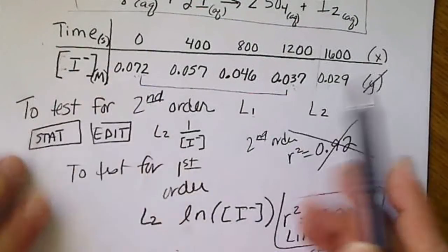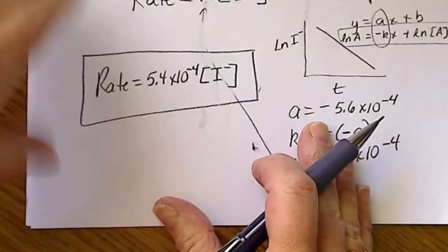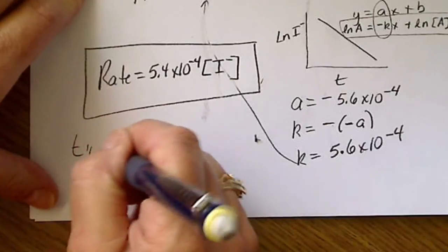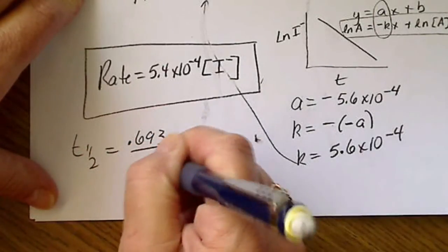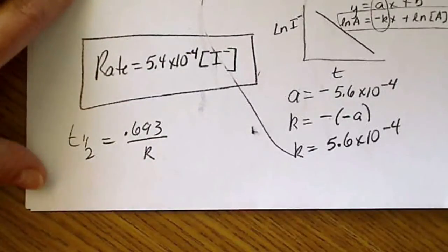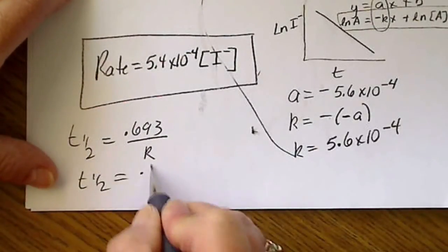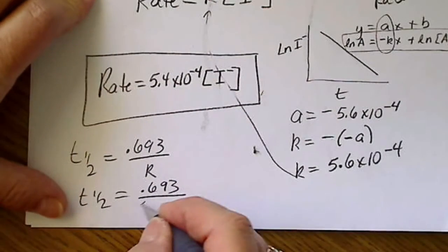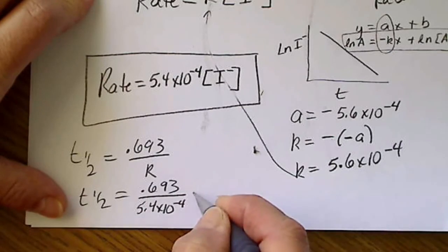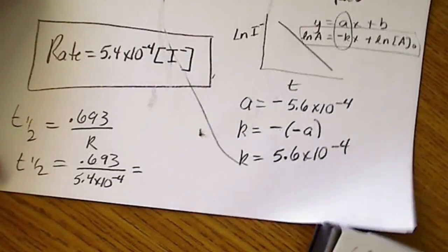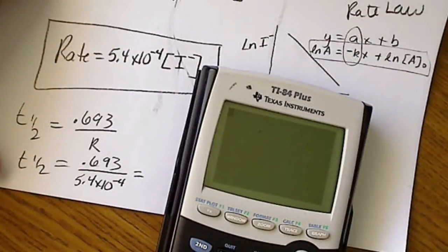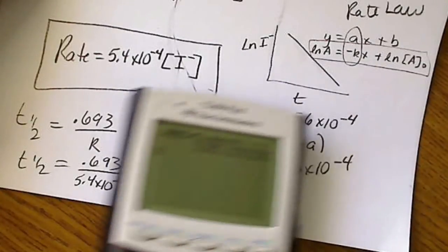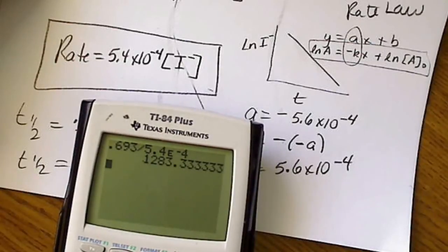But if we calculate the half-life, remember for a first order, T one-half is going to be 0.693 over the rate constant k. So the T one-half is 0.693 divided by this rate constant, 5.4 times 10 to the minus 4. And if we do that, we're going to get 0.693 divided by 5.4 ee negative 4, we're going to get 1,283 seconds.